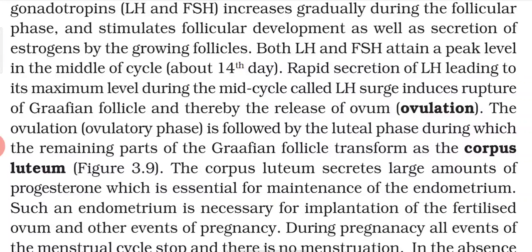Ovulation is followed by the Luteal Phase, during which the remaining part of the Graafian follicle transforms into the corpus luteum. Whenever the Graafian follicle bursts and releases the ovum, the remaining part converts into the corpus luteum — and that phase is known as the Luteal Phase.